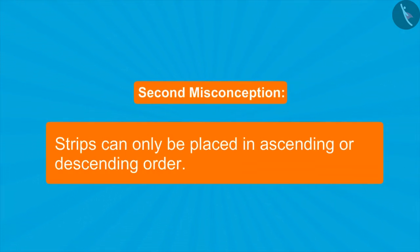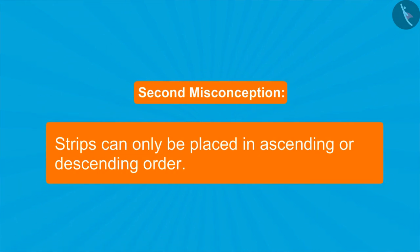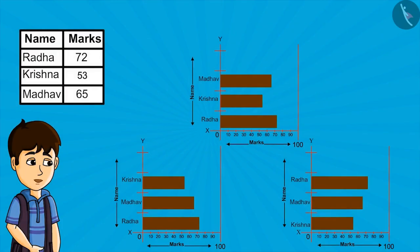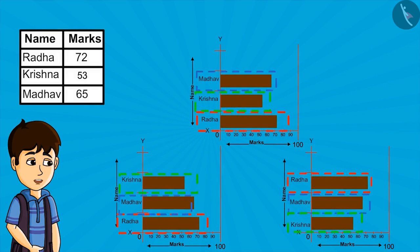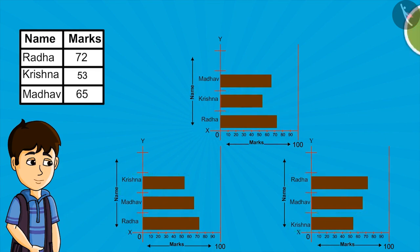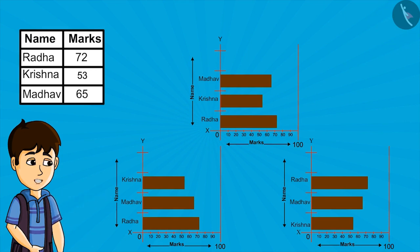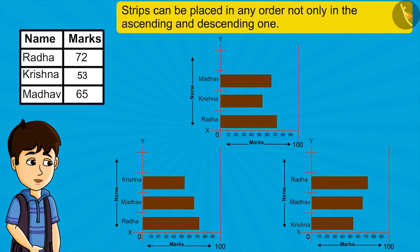Sometimes we also have the confusion whether we can place strips only in ascending or descending order. But kids, we can place strips in any order. We only need to keep in mind that the strip represents the right value. Look at these three charts carefully — you can pause the video and closely look at them. You can rightly interpret data from all three charts. So we can say, strips can be placed in any order, not only in ascending and descending order.